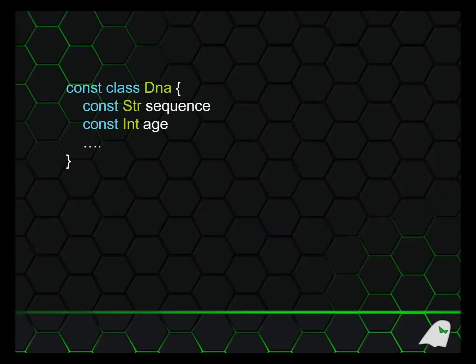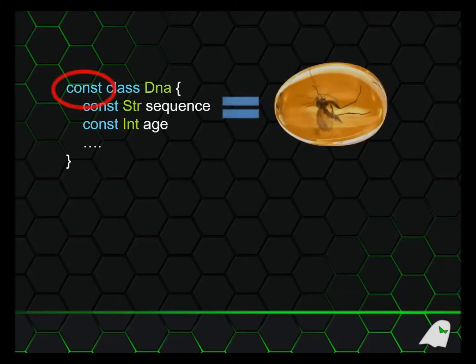For instance, it has immutable classes. These are classes defined with the CONST keyword, which means it's constant. Their values cannot change — they are set in time, preserved forever, like mosquitos in amber — which also means they're very lightweight and thread safe.